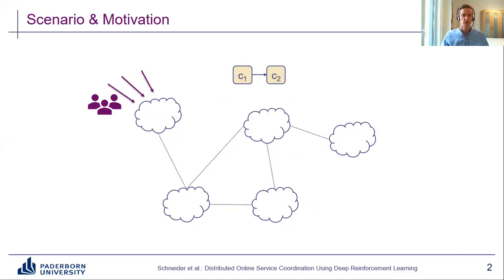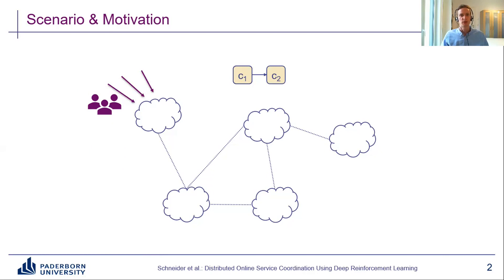Whether we're talking about virtual network functions in network function virtualization, or microservices in a service mesh, or even machine learning functions in a pipeline, we often have services that consist of multiple chained components — let's call them C1, C2, and there could be C3 and C4. We also have a network of distributed nodes interconnected by links, where each node may have limited compute capacity and links have limited data rate. Users want to use these services, and traffic arrives in the form of many rapidly incoming flows.